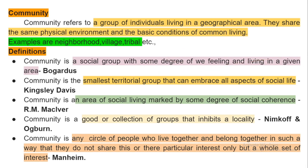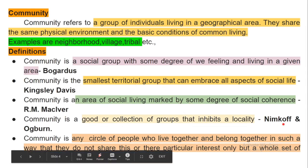Kingsley Davis defined community as the smallest territorial group that can embrace all aspects of social life. R.M. MacIver said that a social community is an area of social living marked by some degree of social coherence — community is an area of social living with a degree of social coherence.